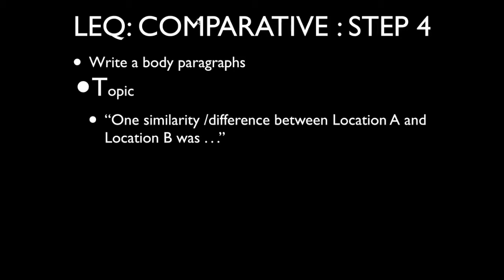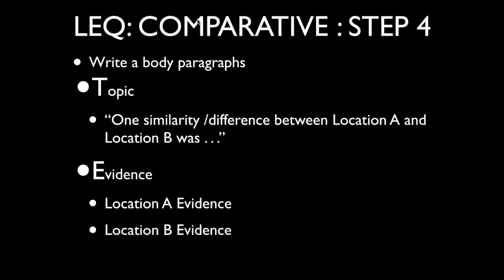For instance, 'one similarity or difference between location A and location B' — that could be the formula for your topic sentence in a comparative essay. Don't make it harder than it has to be. Next we're going to have the evidence — the E. Because you're doing a comparative essay and talking about two different locations, you should draw upon evidence from location A and evidence from location B.